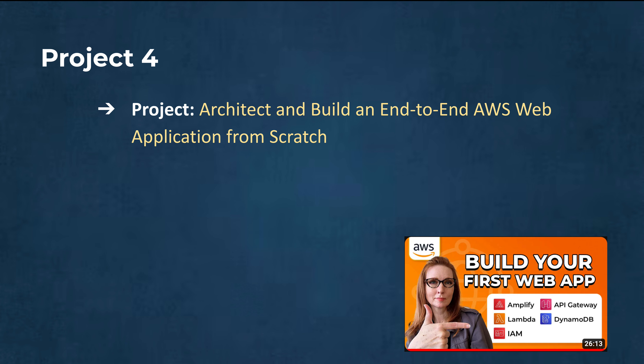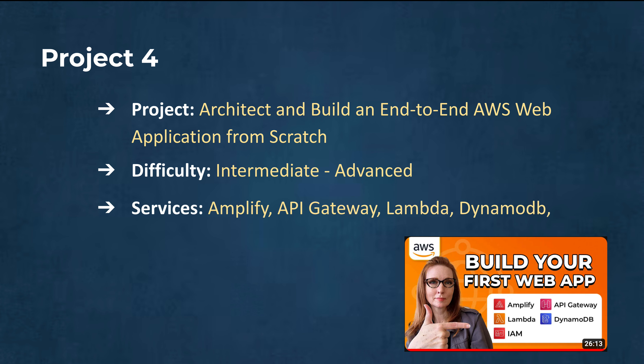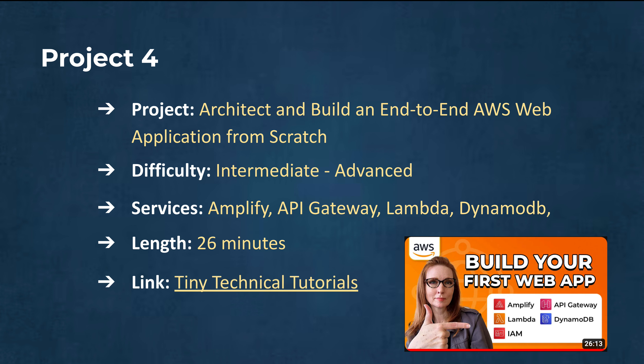Project 4 includes choosing appropriate AWS services, designing for scalability, securing your application, and setting up continuous deployment pipelines. The level is intermediate to advanced. The services used are Amazon Amplify, API Gateway, Lambda, DynamoDB, and IAM (Identity and Access Management). The video length is 26 minutes.